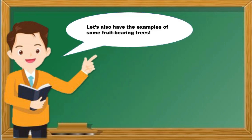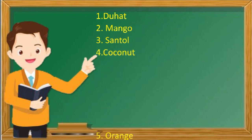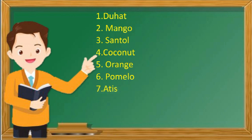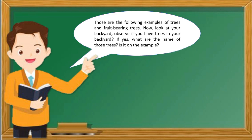Let's also look at examples of some fruit bearing trees. We have duhat, bingo, santol, coconut, orange, pumelo, atis, langka or jackfruit, chico, and banana, among many others. Those are some examples of trees and fruit bearing trees.